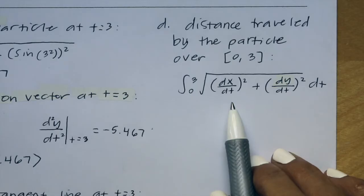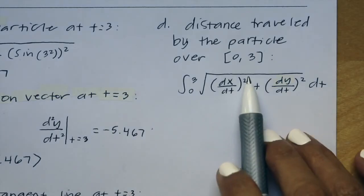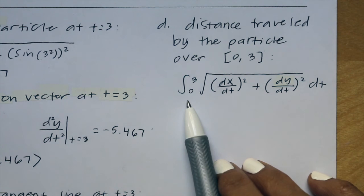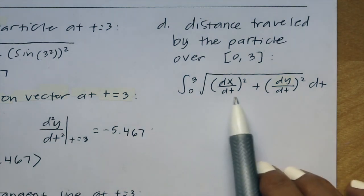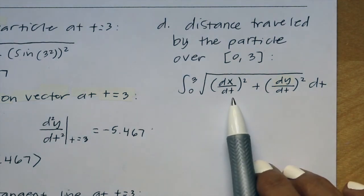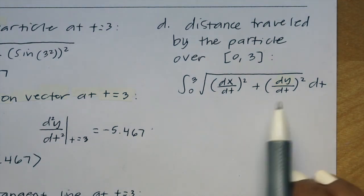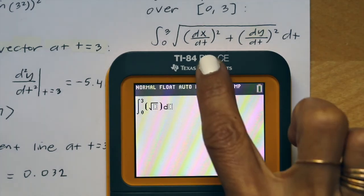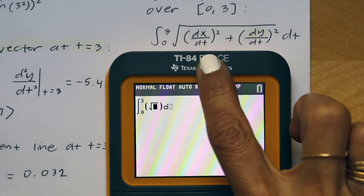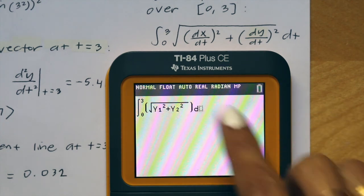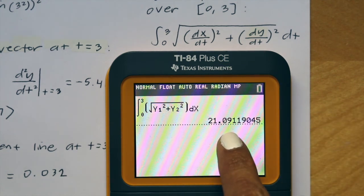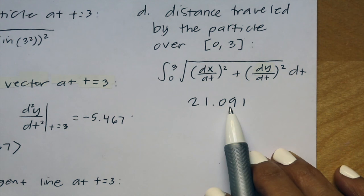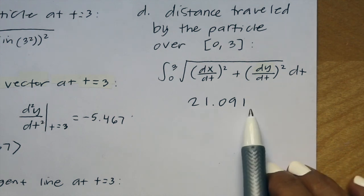Part D says find the total distance traveled by the particle over the time interval from 0 to 3. To find the distance traveled, we use the integral from 0 to 3 of the square root of dx/dt squared plus dy/dt squared, plugged straight into the calculator using math 9. dx/dt is y1 and dy/dt is y2. You get 21.091, so the total distance traveled from 0 to 3 is 21.091.